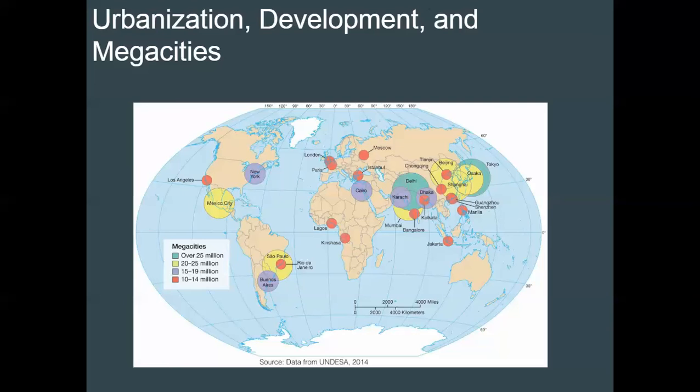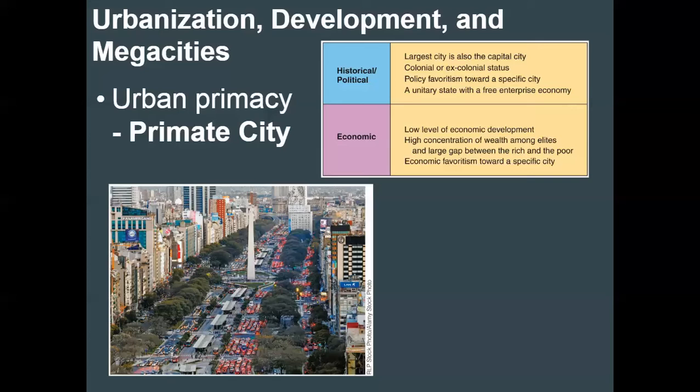Cities exist within an economic, political, and cultural landscape. What we need to understand is the idea of urban primacy. This means a city — or an agglomeration or urban center — that takes on all of the principal roles in a country. The capital and political center of a country is in a given city, along with its economic center, the center of trade, industrialization, banking, and finance. That city also represents the largest population and serves as a cultural center.